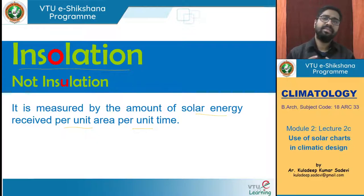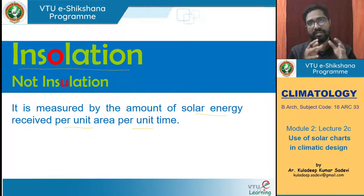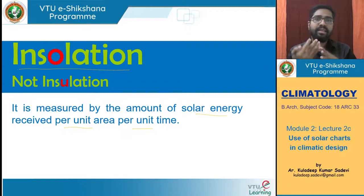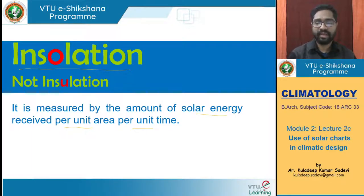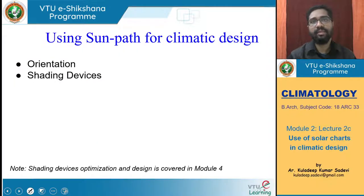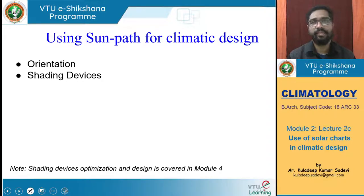In hot places like Mangalore and Chennai, we need to cut down the radiation received on the building so it does not get heated. We reduce insolation by orienting walls so they receive lesser radiation — the better the design. This is one design objective in climatic responsive design. The two major interventions using sun path diagrams are: orientation and shading devices.